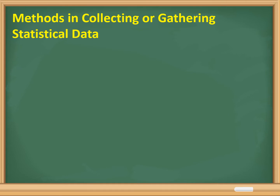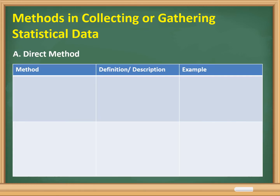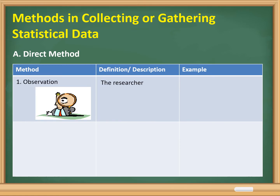In our activity, we learned that after we collected the data needed, it is very important to organize them so that we could easily answer the questions. Now, let us talk about the different methods in collecting or gathering statistical data. We have the direct method. First, we have observation — the researcher sees the situation directly.